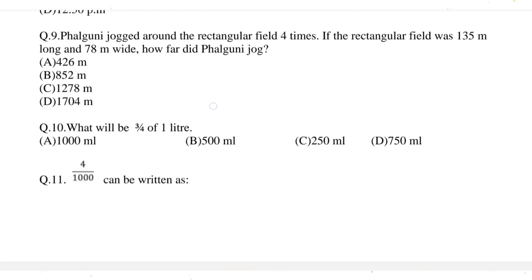Question 9: Falguni jogged around a rectangular field 4 times. If the rectangular field was 135 meters long and 78 meters wide, how far did Falguni jog? The correct option is option D, 1704.